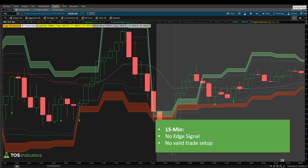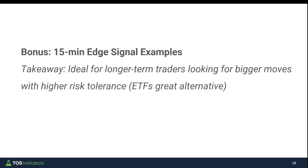The takeaway on this NASDAQ trade: the one-minute did give the early entry, which in the Dow example gave an opportunity to reduce risk. This time, that early entry translated into being stopped out, versus using a more conservative timeframe like the 3, 5, or 15-minute, which would not have given you an entry at all. So a few different examples in the S&P, the Dow, and the NASDAQ. Now let's move on to a final bonus section for those who are more longer-term or swing traders who like to stay in for much more than a few minutes — let me show you some examples of our 15-minute edge signal.